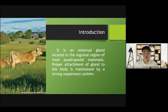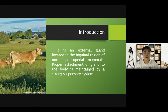The goats or the sheep. In other mammals, such as the monkeys and the elephants, it is located in the thoracic region. Proper attachment of the gland to the body is maintained by a strong suspensory system.